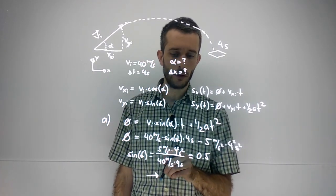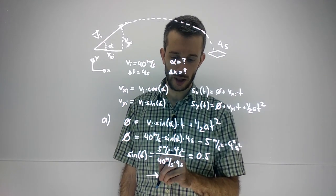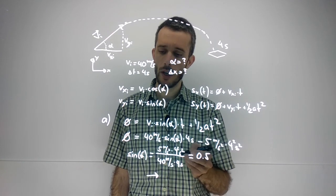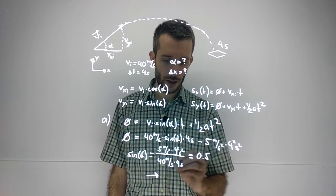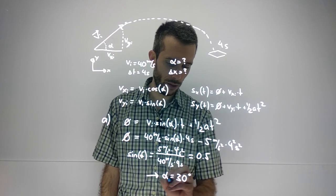If I look at the units, I have meters per second squared times seconds squared gives me meters, and down here I have meters per second times seconds, also gives me meters, that cancels out. Sine of alpha is 0.5, therefore alpha is our all-time favorite angle of 30 degrees.